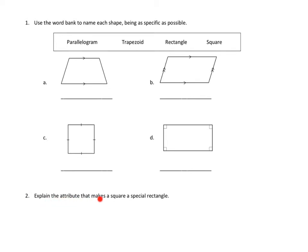Explain the attribute that makes a square a special rectangle. Wow, this is a tough one. Is it about their angles? If we look at this square, it has right angles. But these rectangles also have right angles at their corners. So that's not it. The angles are the same. It must be something about the sides.